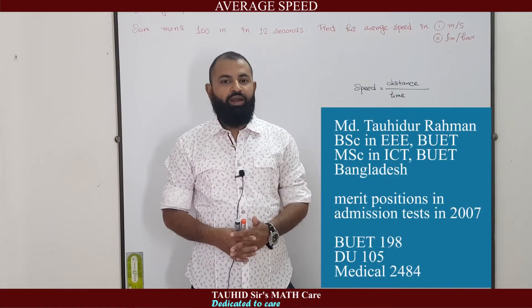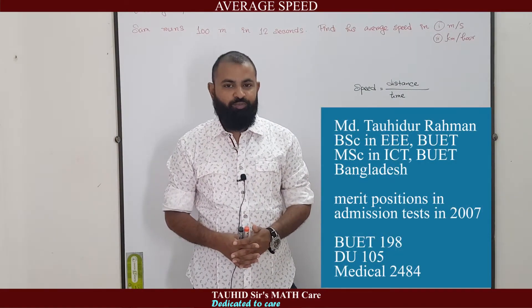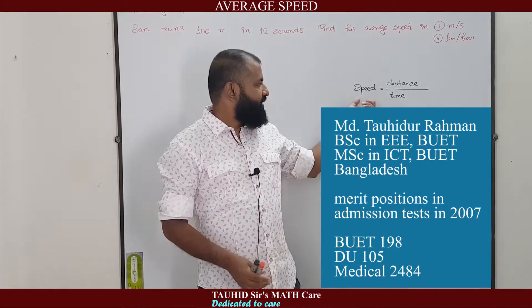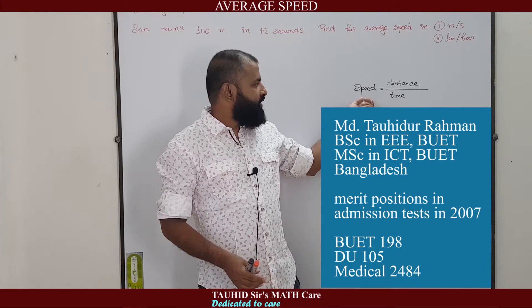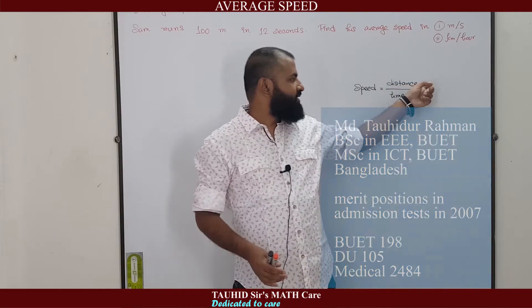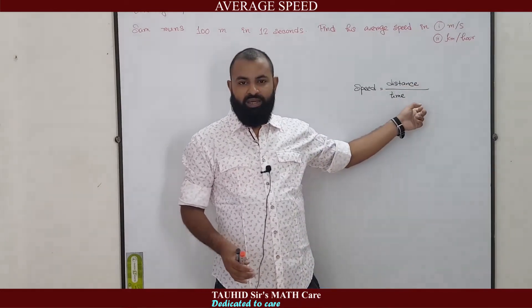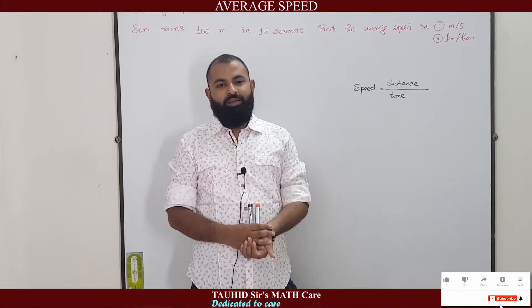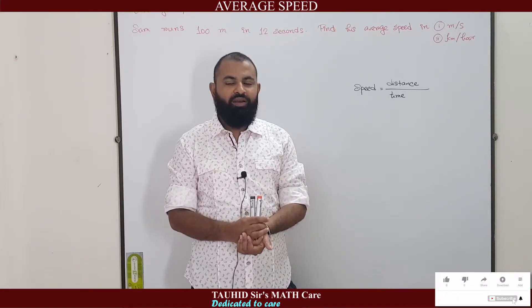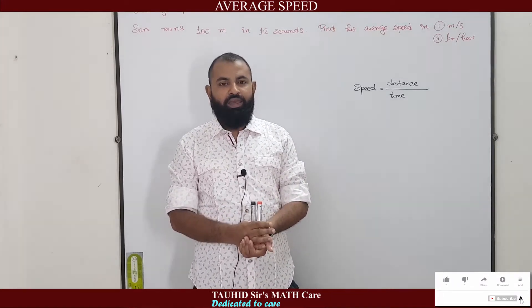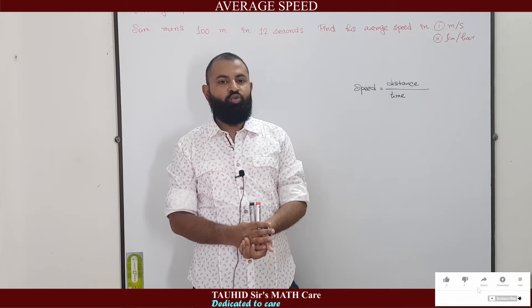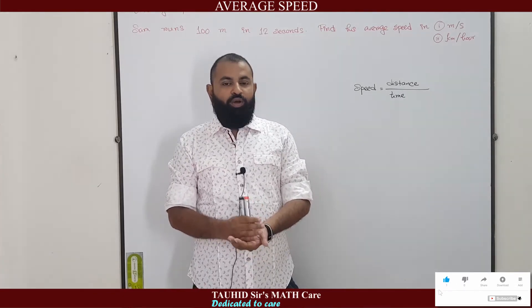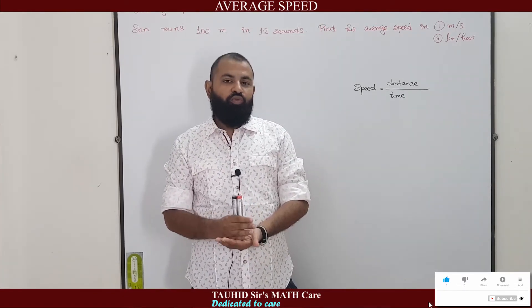In this video we will learn about average speed. The definition of speed is given by the formula: speed equals distance divided by time. Here you are given an example — Sam, a boy, is running a 100 meter race and he completes his race in 12 seconds. You are asked to find his speed.